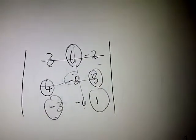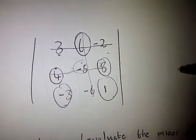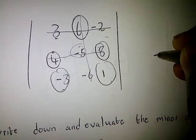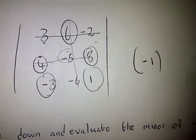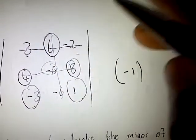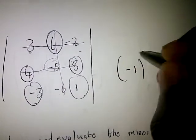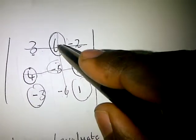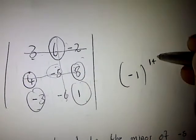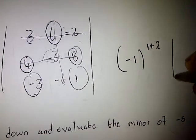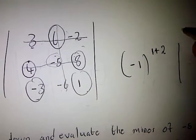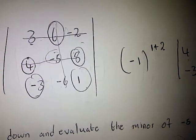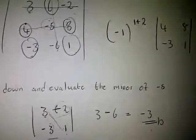To determine the cofactor of 6, we have to show the position of 6 in the matrix. Since 6 is in the first row and the second column, we apply the sign factor: negative 1 to the power of 1 plus 2, multiplied by the minor. The minor of 6 is the matrix: 4, 8, negative 3, and 1.